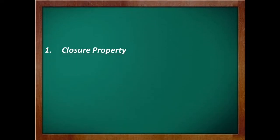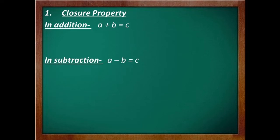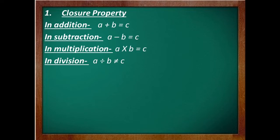The first property is closure property. It says that on adding two integers, we will always get an integer. On subtracting two integers, we will always get an integer. On multiplying two integers, we will always get an integer. But on dividing two integers, we will not always get an integer — sometimes the answer comes out in decimals or fractions. So integers are closed under addition, subtraction, and multiplication only.